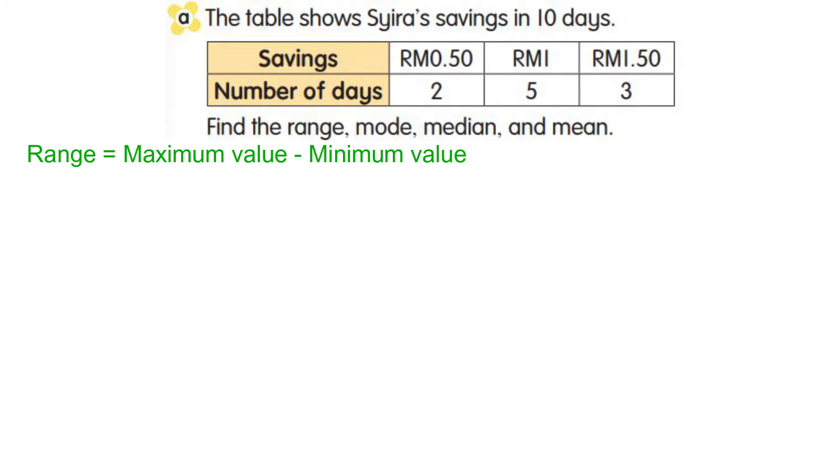So 1 ringgit 50 cents minus 50 cents — the range will be 1 ringgit.